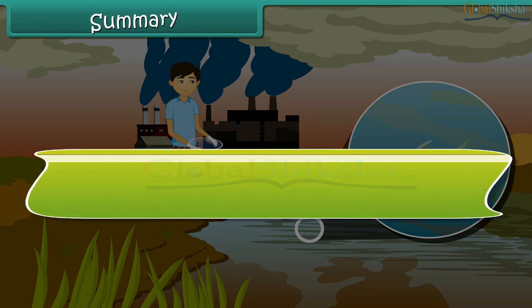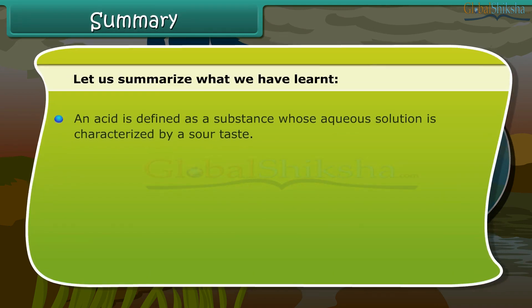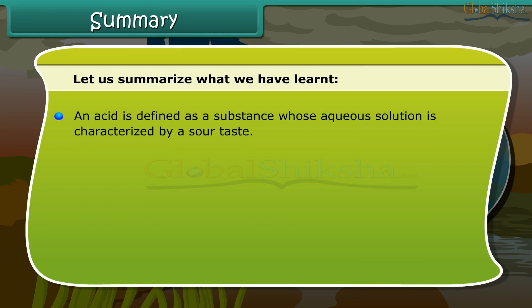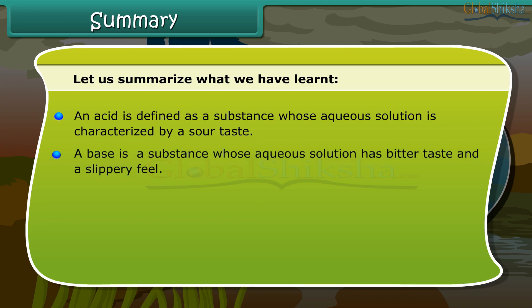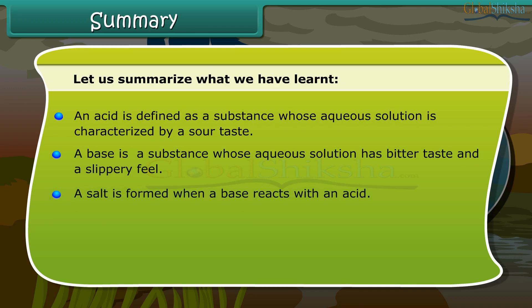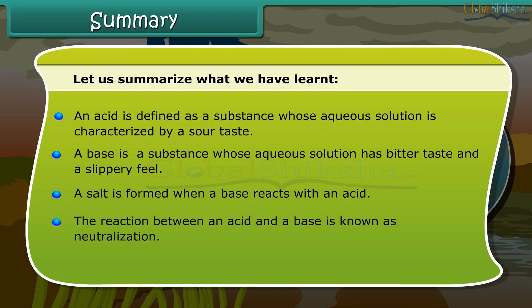Let us summarize what we have learned. An acid is defined as a substance whose aqueous solution is characterized by a sour taste. A base is a substance whose aqueous solution has a bitter taste and a slippery feel. A salt is formed when a base reacts with an acid. The reaction between an acid and a base is known as neutralization. Neutralization plays an important role in our everyday life.